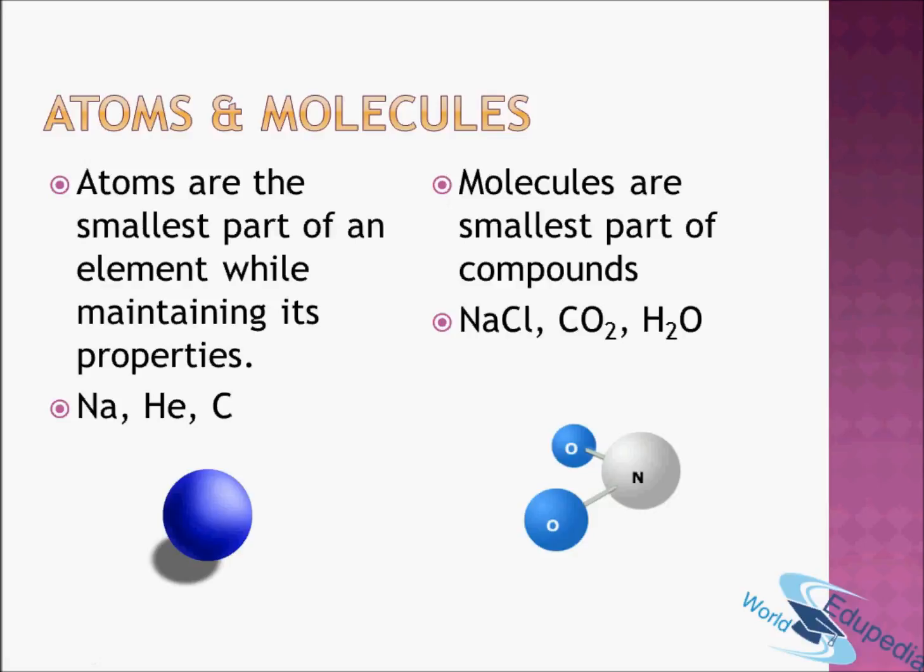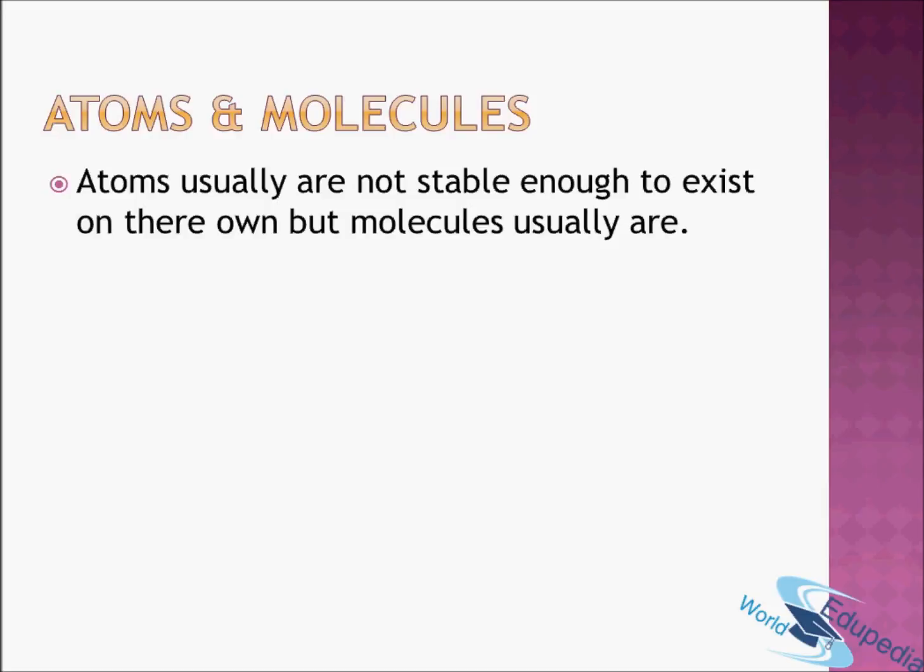Another point which you need to note between atoms and molecules is usually atoms cannot exist independently, that is on their own. But molecule by itself comes out to be quite stable. So let's say you have hydrogen gas in the atmosphere. The hydrogen gas in the atmosphere doesn't actually exist as a sample of hydrogen atoms, but it exists as a sample of hydrogen molecules. So the hydrogen gas doesn't exist as single H, but it exists as H2 which is nothing but a molecule of hydrogen.